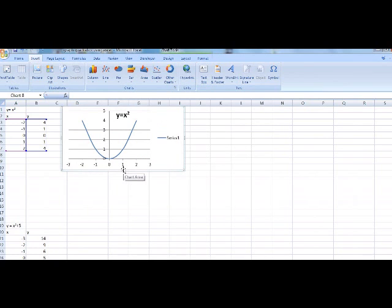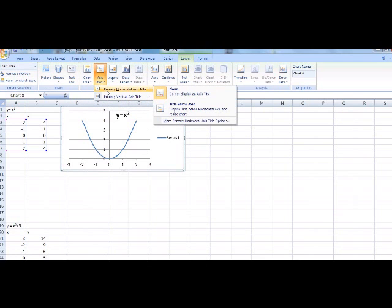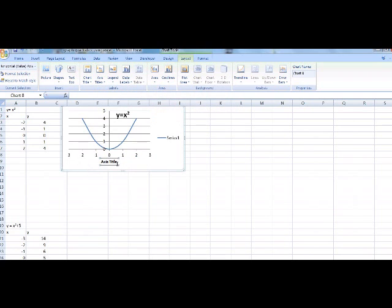If I want to label my x and my y axis, I can do that also. We're still on layout. We did chart title. Right next to chart title is axis titles. You can label your x and your y axis. The horizontal is your x axis. Right now there's none. I'm going to go to title below axis. I'm just going to label it x axis right now.